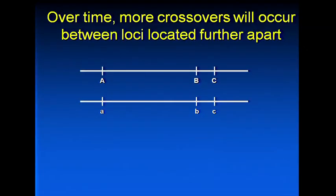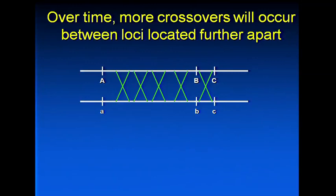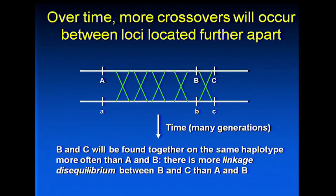Linkage disequilibrium arises because if two loci are very close together, there isn't much opportunity for recombination to break up the combinations over time. For loci further apart, recombination during meiosis has more opportunities to put alleles into new combinations. So over many generations, we see more LD between closely-spaced loci than between distant ones. LD results from two things: time and the process of recombination.